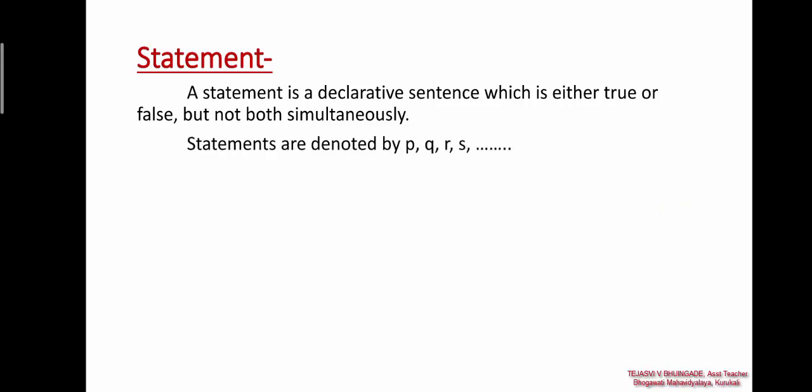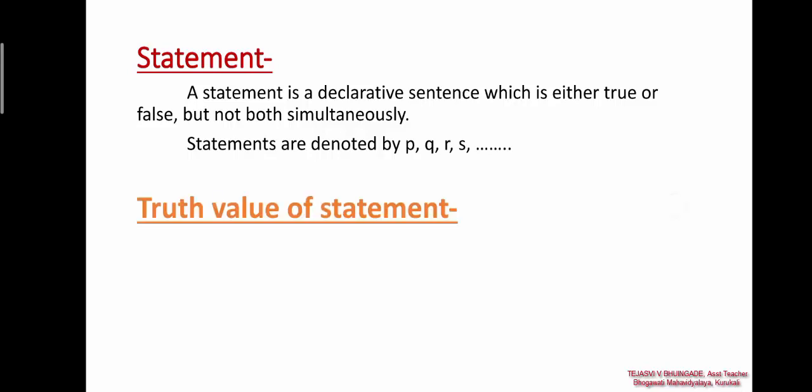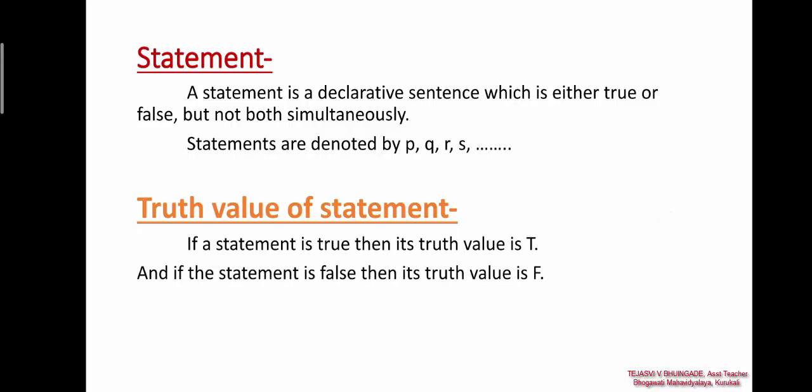Statements are denoted by small letters P, Q, R, S, and so on. The truth value of a statement is determined by whether the sentence is true or false. If the statement is true, then its truth value is T. If the statement is false, then its truth value is F.